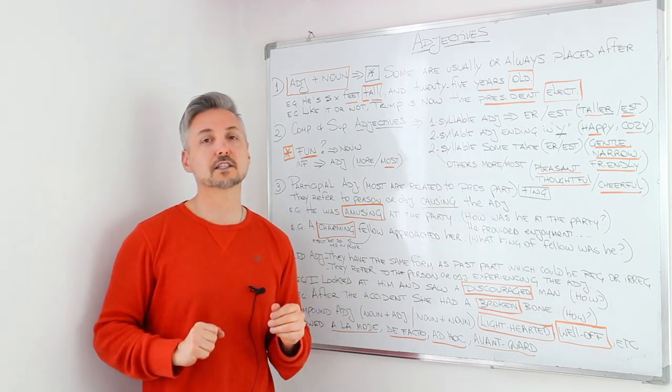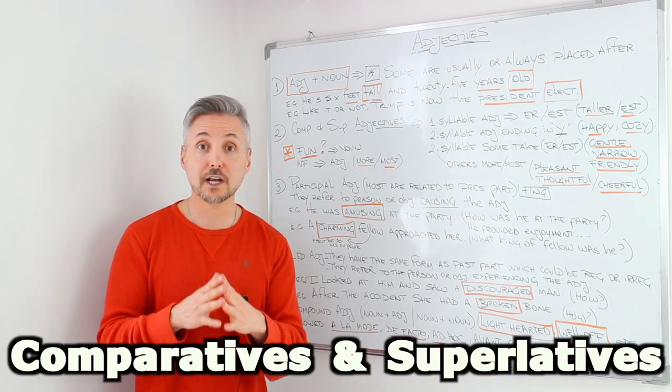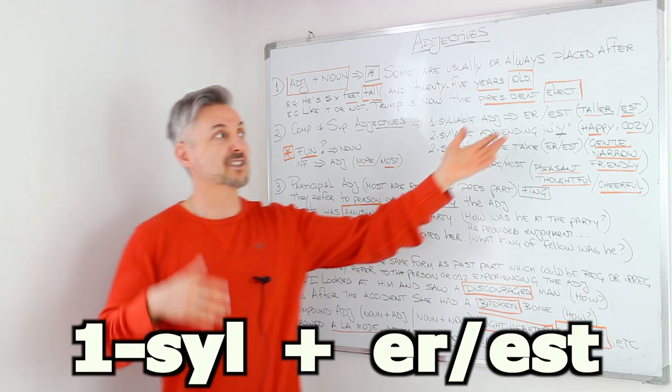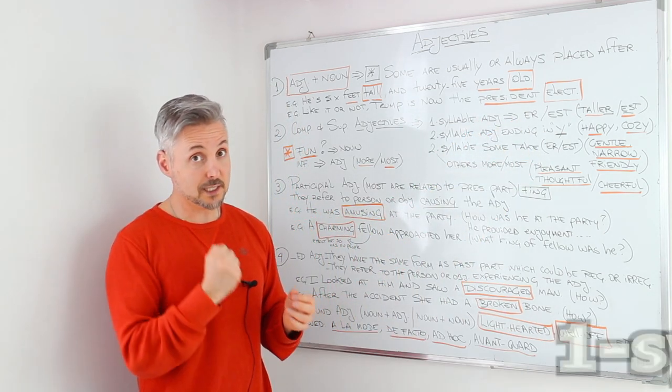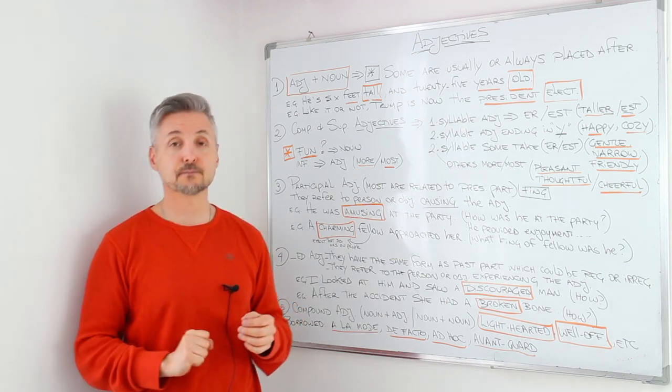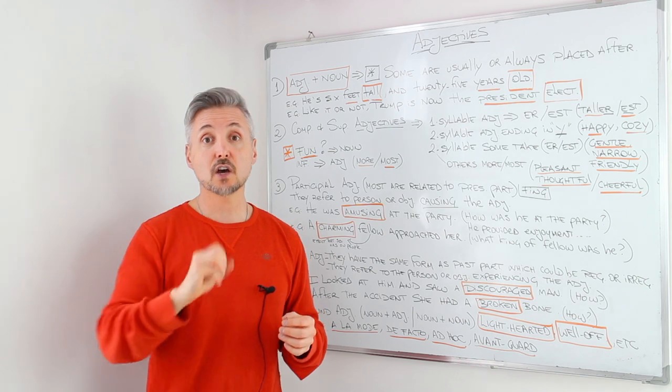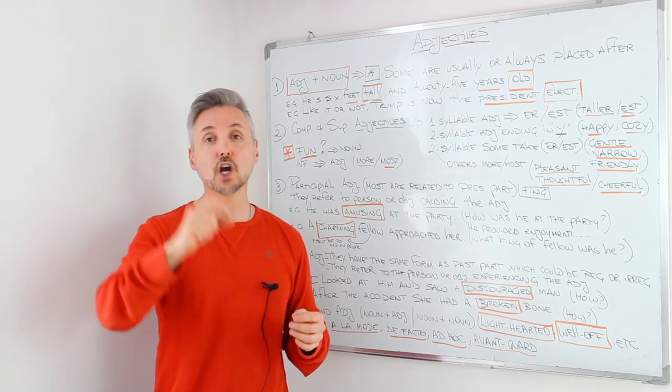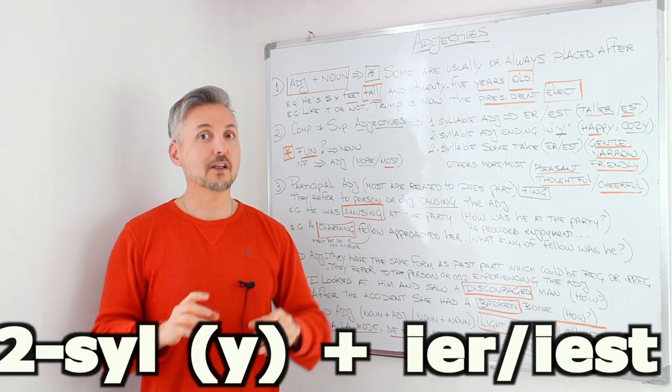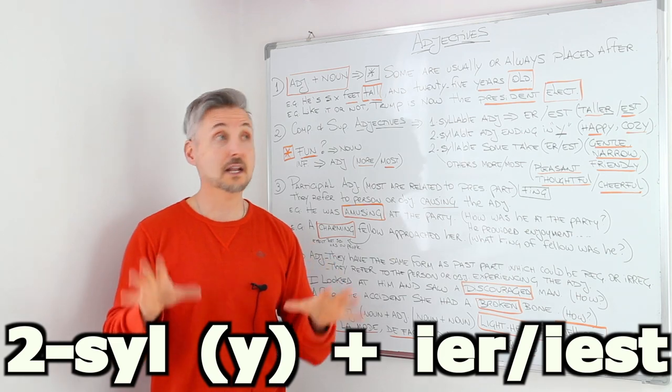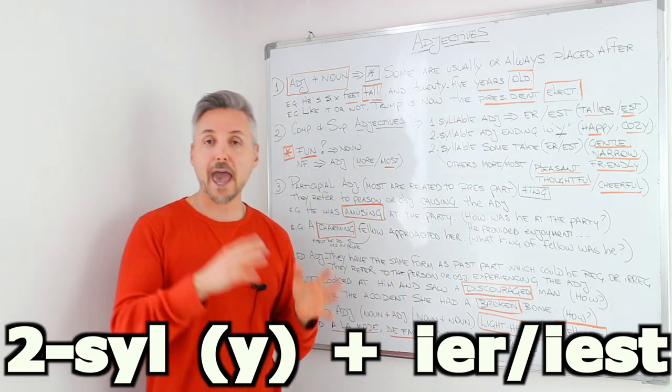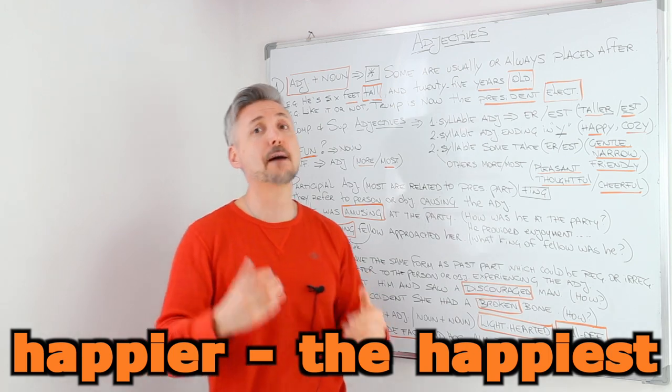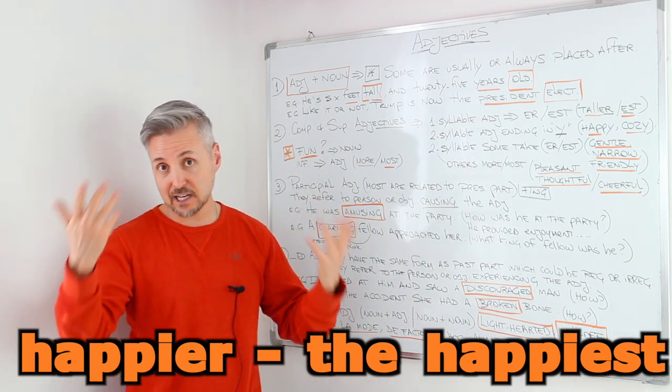So the second exception or point that I want to talk about is about comparative and superlative adjectives. Now, you know the usual one-syllable adjective. Take ER or EST. Like tall. So we say taller than, the tallest. And so on. One syllable. Or big. Bigger, we add another G. Because it's consonant-vowel-consonant. So we need to add another consonant. In this case is G. So bigger than and the biggest. But the second syllable adjectives are a little bit tricky. So the second syllable adjectives ending with Y. So happy. We take out the Y and we add the I. So happier. The happiest. We have also cozy and etc. We have many.